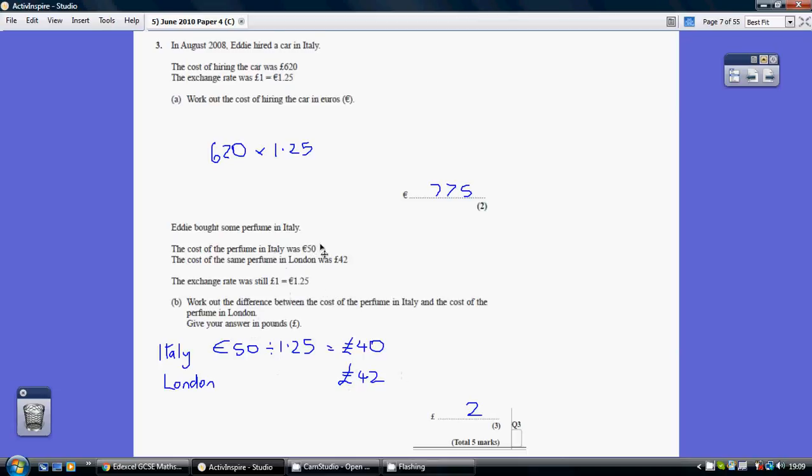Now for the Italian one, we need to go from euros to pounds. So are we going to be multiplying or dividing by 1.25? Well, we're trying to get a smaller number on this occasion. So we're going to be dividing this 50 euros by 1.25.